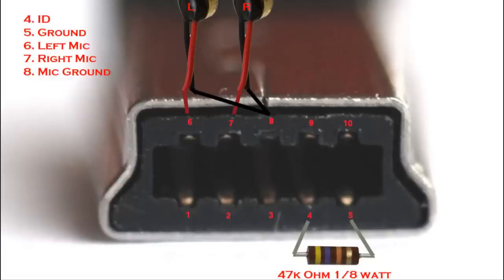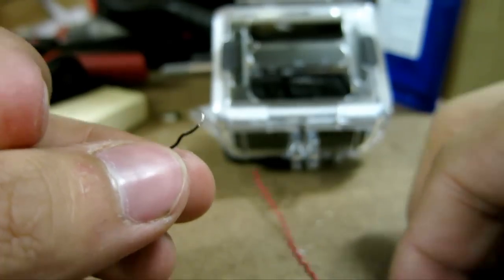I also have the schematics shown. As you can see, the wiring is pretty simple. You have two mics, right and left. The left mic positive goes to pin number six, the right mic positive goes to pin number seven. Both of the grounds go to pin number eight, and then you hook up a 47k ohm resistor between pin number four and number five. That's it.